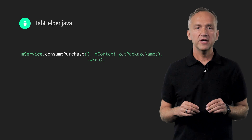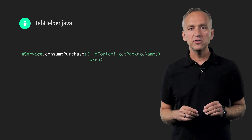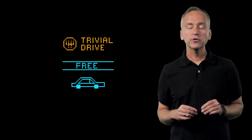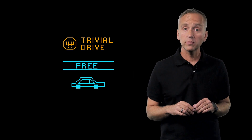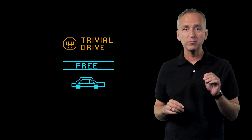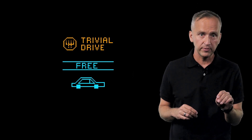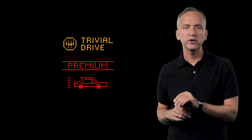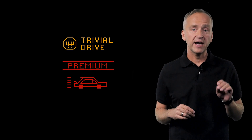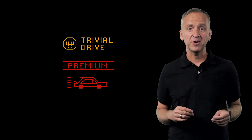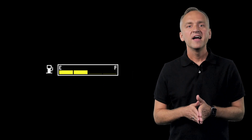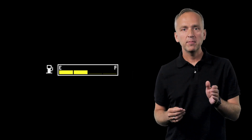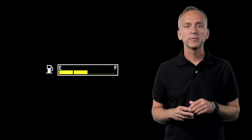consumePurchase tells the Google Play backend that the user took inventory of the product. The call to consumePurchase is necessary because the Google Play backend does not make a distinction between a consumable item such as gas, or a non-consumable item, for example an item representing an upgrade to a fancy red car. While Google Play tracks the purchases so you don't have to, managing the user's inventory is your job.